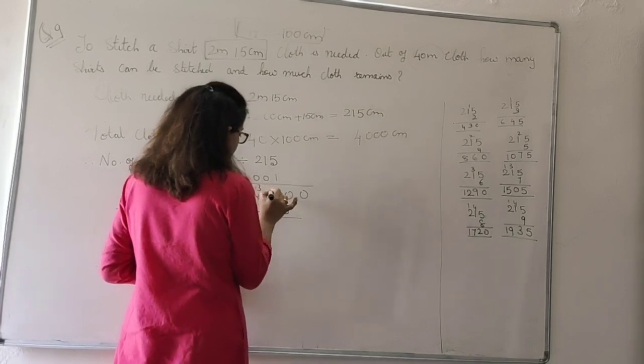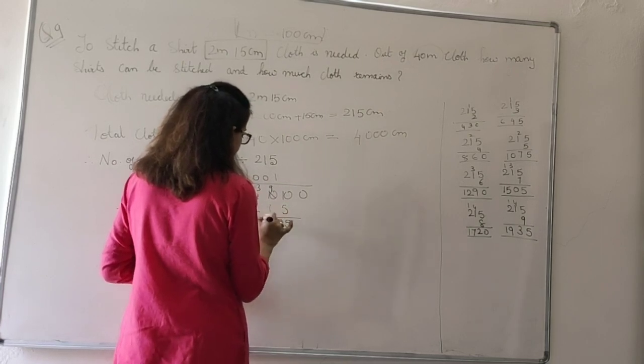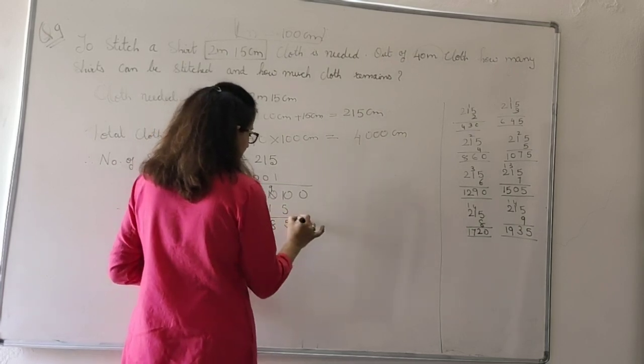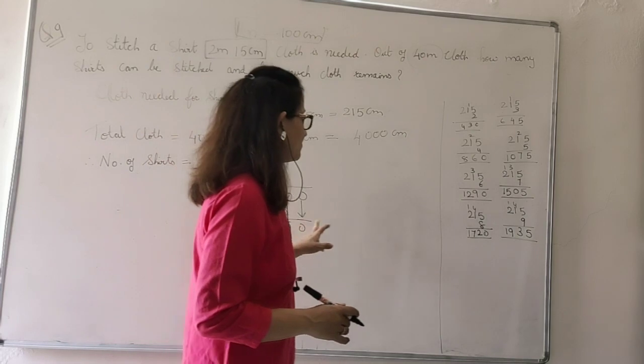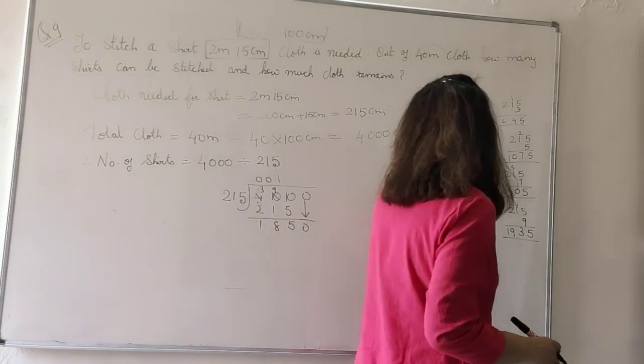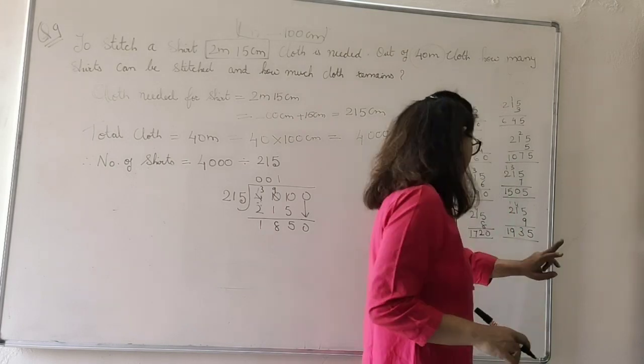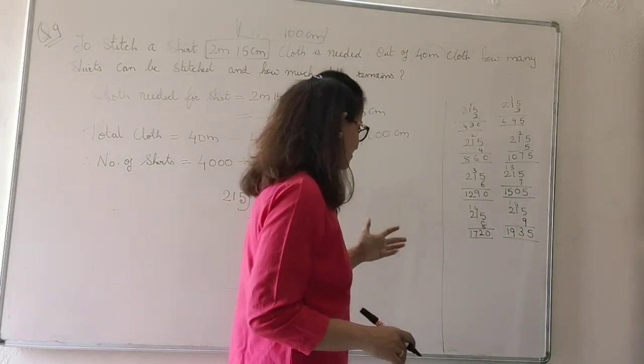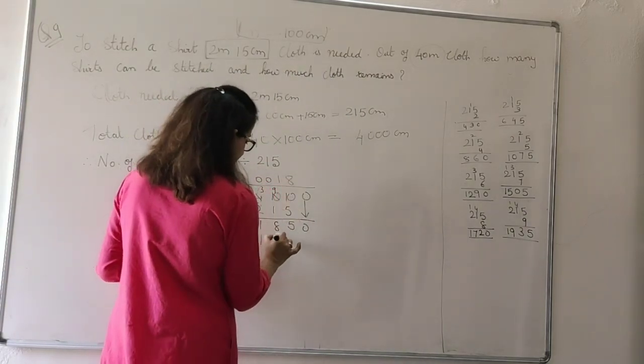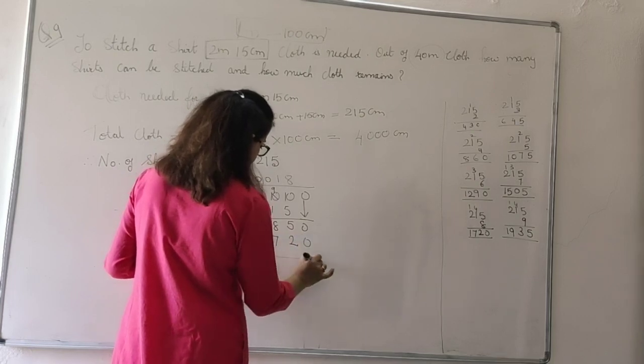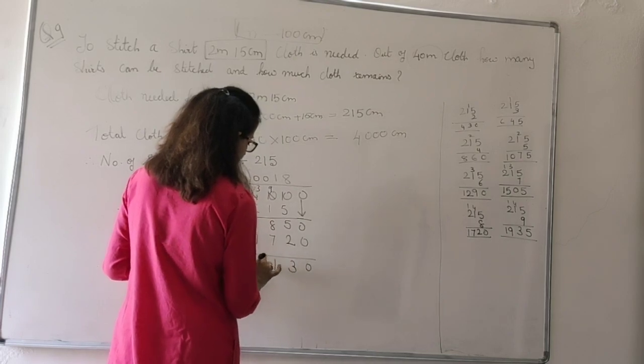Now, subtract. 10 minus 5 will be 5. 9 minus 1 will be 8. 3 minus 2 will be 1. And bring down this 0. Now, I have 1850. 215 eights are 1720. And 215 nines are 1935. 215 nines increases. So, we will not use. We will use 215 eights are 1720. 0 minus 0 will be 0. 5 minus 2 is 3. 1, 0.